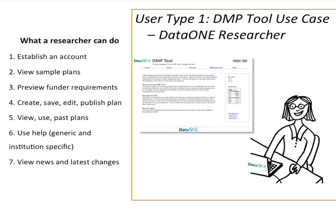That's the screenshots in a nutshell — I didn't go through all of them, obviously, because there's also the generation of the plan itself and its format. To summarize for user type one, what they can do when using the DMP tool: they can establish an account, view sample plans, preview funder requirements, create, save, edit, and publish a plan, view and use past plans that have been successful or not, use help at both generic and institutional levels, and view news and latest changes.